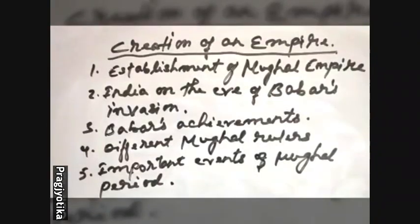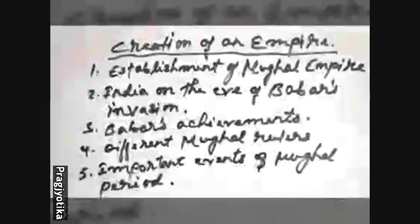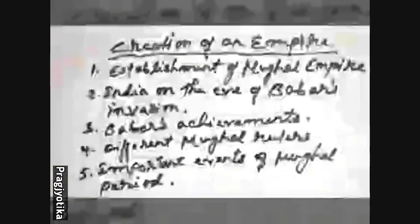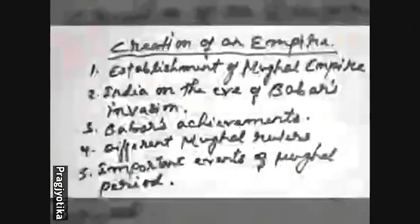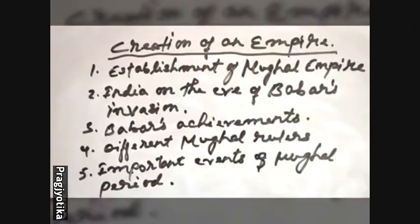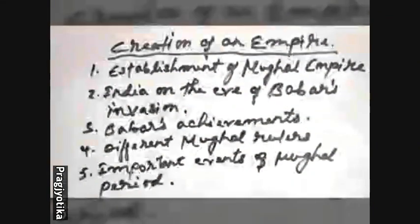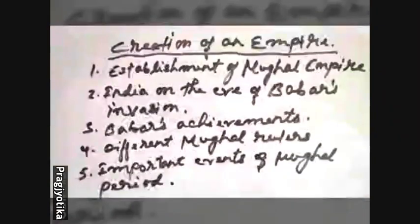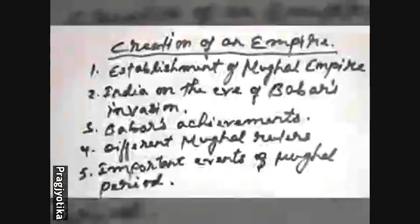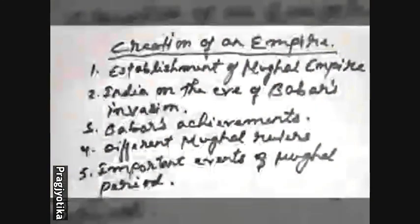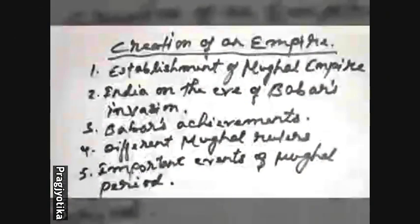We will also discuss about Babur's achievements, and then the different Mughal rulers such as Humayun, Akbar, Jahangir, Shah Jahan, and Aurangzeb. We will also discuss about the important events that took place during the Mughal period — the wars, their way of administration, and how they managed and looked after the people. All these things we will learn in this chapter.